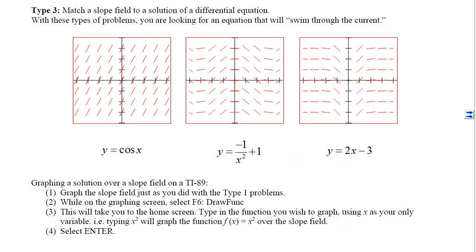Type 3 is matching a slope field to the solution of the differential equation, rather than the equation itself. For these problems, you look for an equation that will swim through the current. The graph of cosine of x is a periodic trig function; a line equation gives a straight line. A line swims through this current, cosine swims through this current, and the third solution is a rational function with an asymptote at zero, scooting down toward zero on both sides.